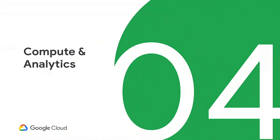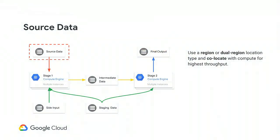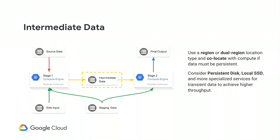In computing and analytics pipelines, there are several types of data, and your location type choice depends on the type. Source data is typically persistent and loaded when the pipeline starts — here, high throughput matters, so co-location with workers means region or dual region make sense. Intermediate data — produced by one pipeline stage and consumed by the next — is short-lived. Users needing higher throughput and lower latency for this data may be better served by local SSD or specialized shuffle services rather than GCS.